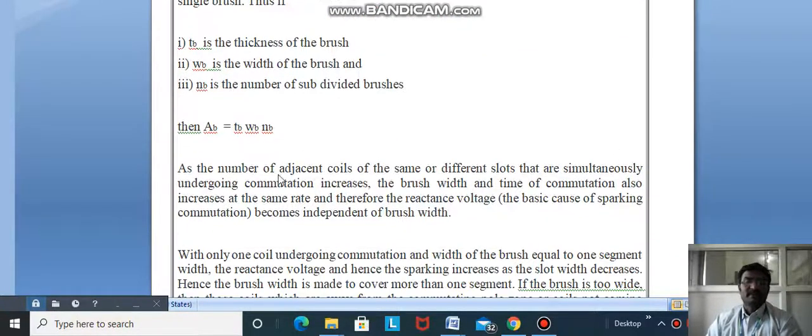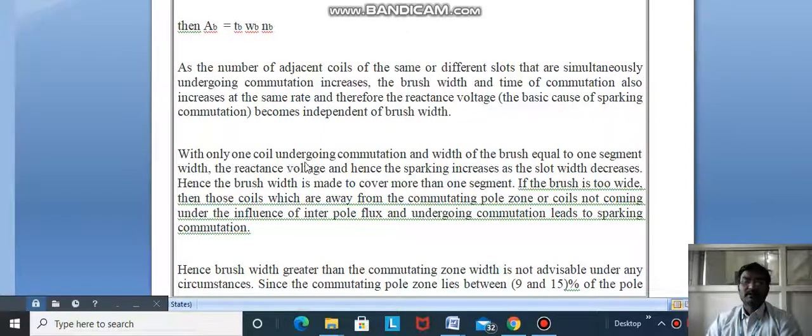Here tb is thickness of brush, wb is width, and nb is number of subdivided brushes. Ab = tb × wb × nb. As the number of adjacent coils simultaneously undergoing commutation increases, brush width and time of commutation increase at the same rate. Therefore, reactance voltage becomes independent of brush width.